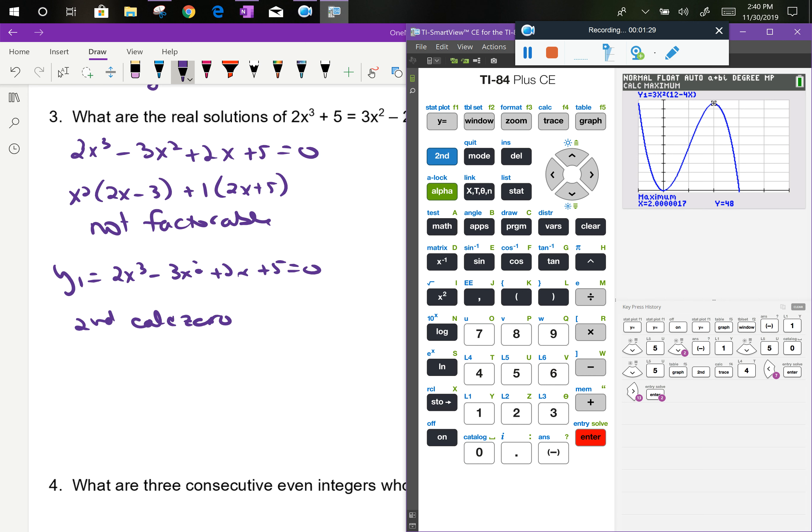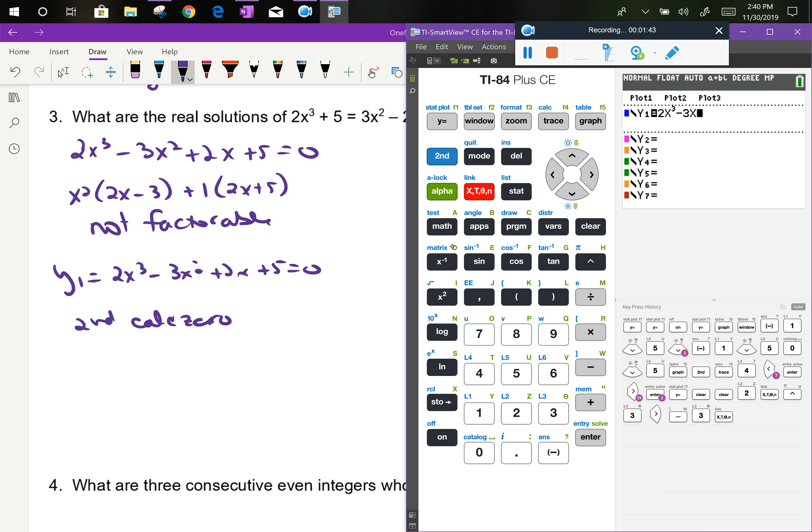I've got my graphing calculator here. I'm going to clear out my work from previous problem. And I'm going to type in this formula, 2x³ - 3x² + 2x + 5. And I'm going to go ahead and do zoom standard, because I don't know what a good viewing window is.